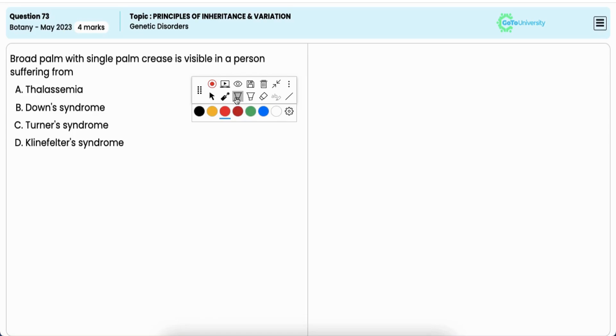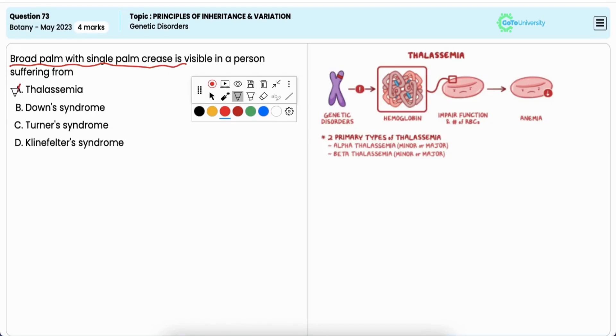In this question, you have to identify the genetic disorder, the typical symptom of which is broad palm with single palm crease. Option A, Thalassemia: It is incorrect. Thalassemia is a genetic disorder affecting hemoglobin production leading to anemia. It does not cause a single palm crease.